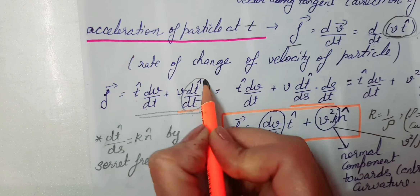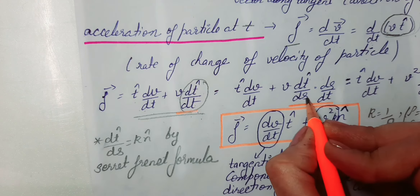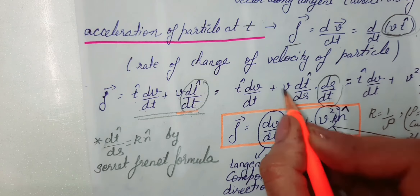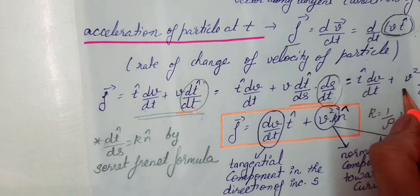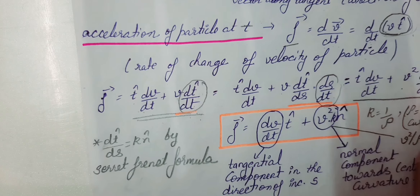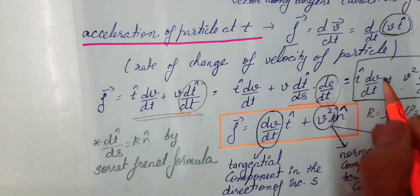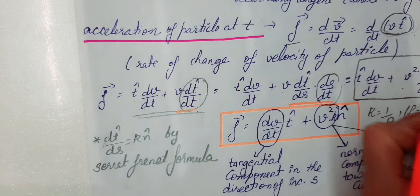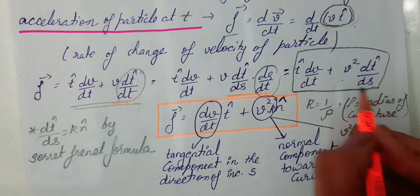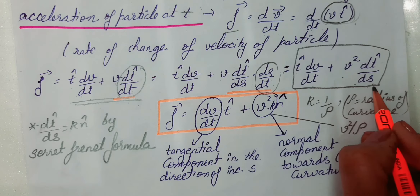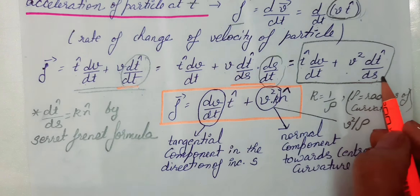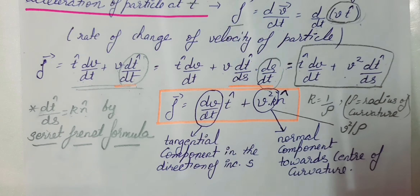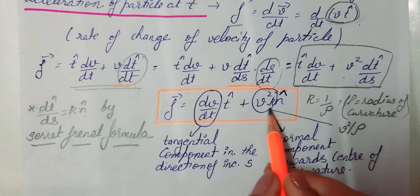अब dT̂/dt को हम chain rule से लिख सकते हैं: dT̂/dt = dT̂/ds · ds/dt. जहाँ ds/dt की value V (magnitude) है, so one V already was there and one V comes here, giving V². अब dT̂/ds की value, by Serret-Frenet formula, = κn̂ (kappa times unit normal vector)। So dT̂/ds = κn̂.